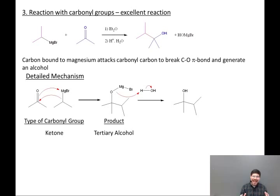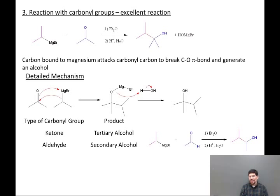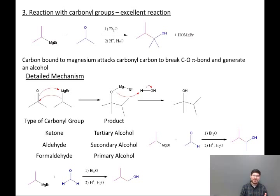A summary of how Grignards react with different carbonyl groups: if the Grignard reacts with a ketone, the product is a tertiary alcohol. If the Grignard reacts with an aldehyde, the product is a secondary alcohol. Isopropyl Grignard plus acetaldehyde gives us a five-carbon secondary alcohol. If the Grignard reagent reacts with formaldehyde, the product is a primary alcohol. The three-carbon isopropyl Grignard reacting with one-carbon formaldehyde gives us a four-carbon primary alcohol.